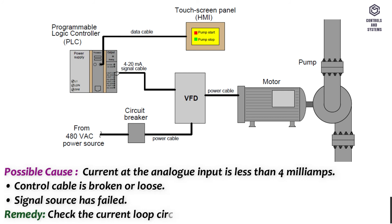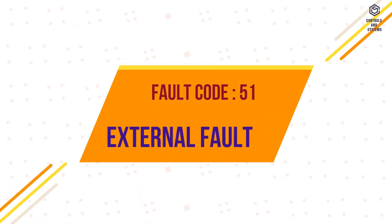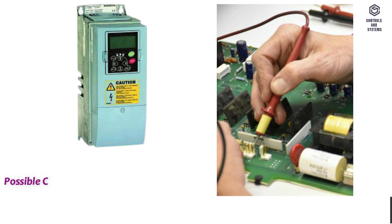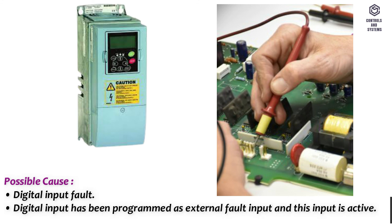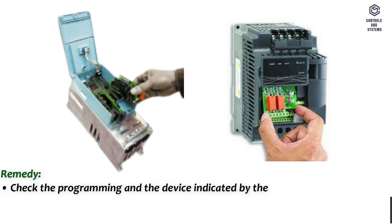Fault code 51 – External fault. Possible cause: a digital input has been programmed as an external fault input and this input is active. Remedy: check the programming and the device indicated by the external fault information, and check the cabling of that device.